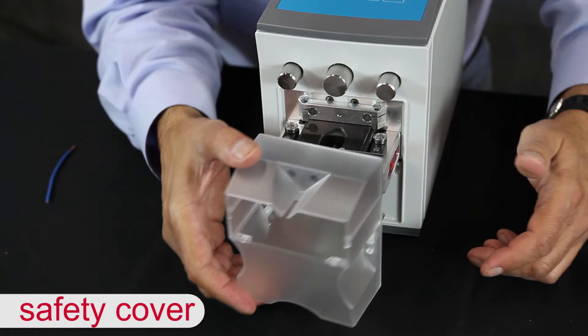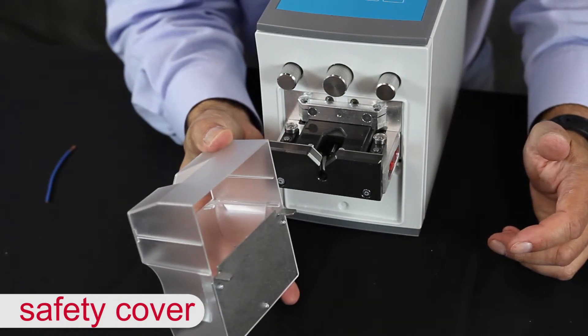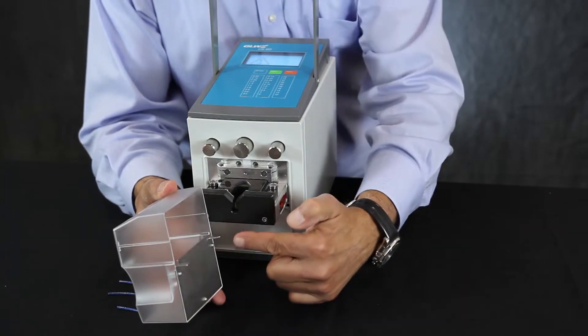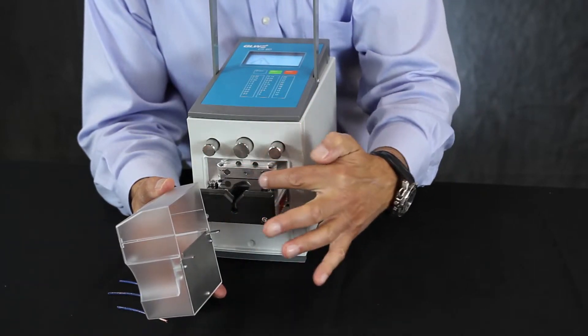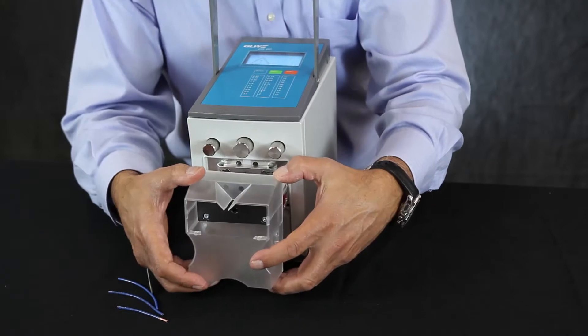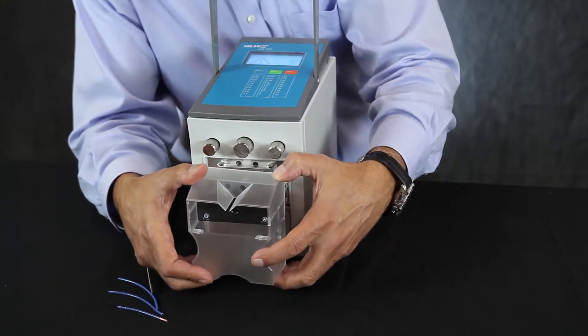The CS60 Wire Stripper features an integrated front safety cover which disengages the mechanism when removed from the unit. Removing this cover allows you to safely access its blades and clear the collected pieces of insulation.